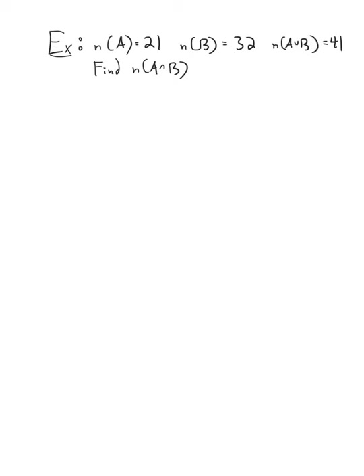All right, just a quick example. We'll do it algebraically and then talk about what it looks like in terms of a Venn diagram. We have that the cardinality of set A is 21, the cardinality of set B is 32, and the cardinality of the union of these sets is 41. And we're looking for the cardinality of the intersection. Remember that the cardinality of a union is the sum of the cardinalities of both constituent sets minus that intersection to avoid double counting.